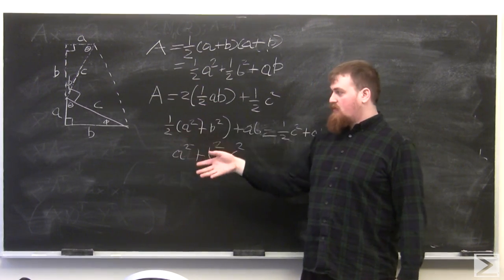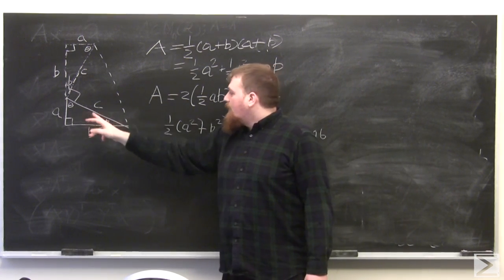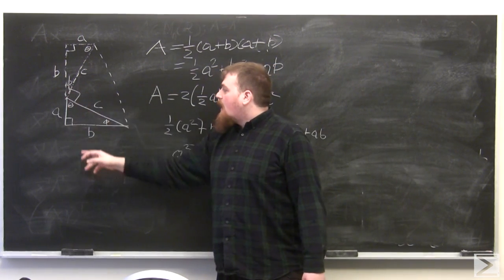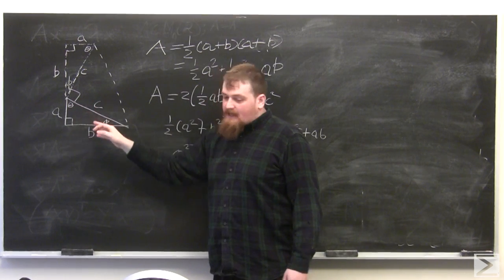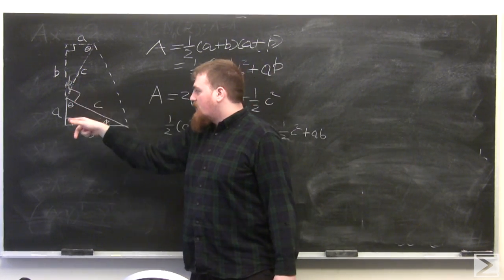the A side is perpendicular to the B side. Because phi plus theta plus 90 equals 180, this angle also has to be 90 degrees. So the area of the big triangle is one half C squared, and setting these equal we get